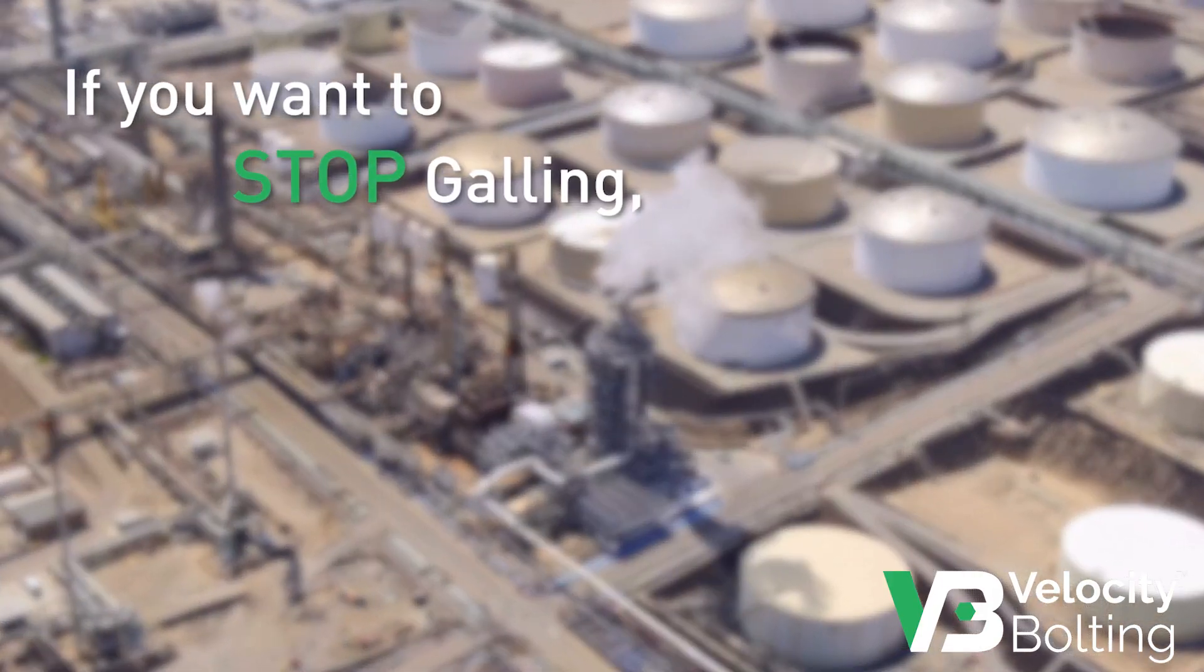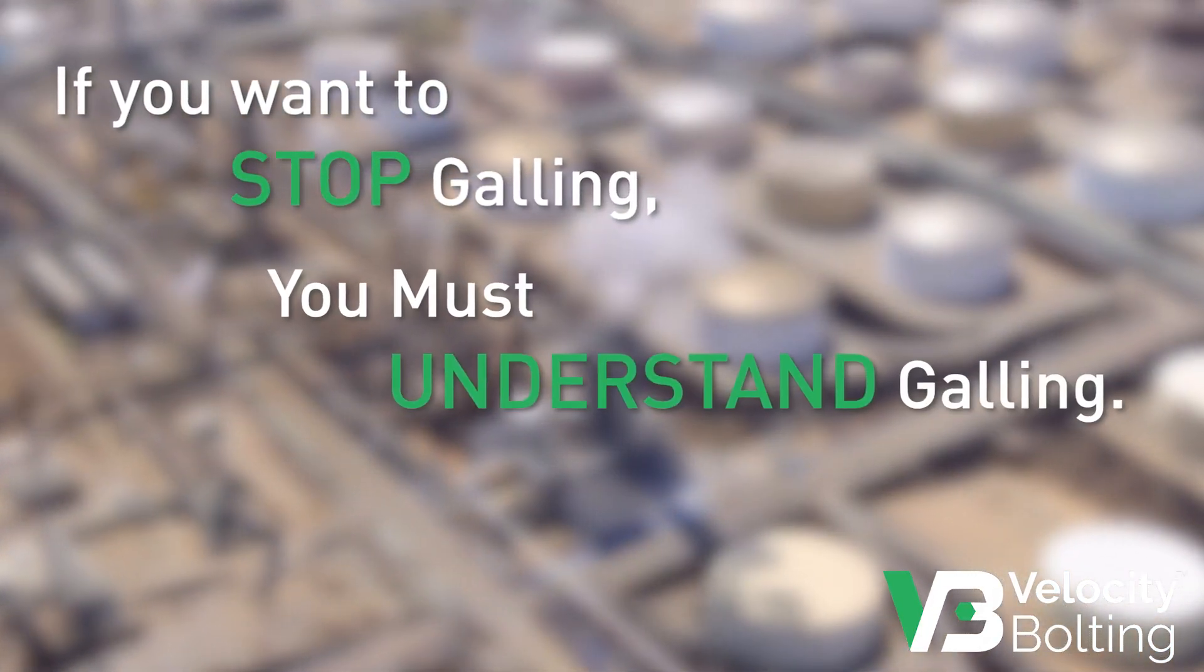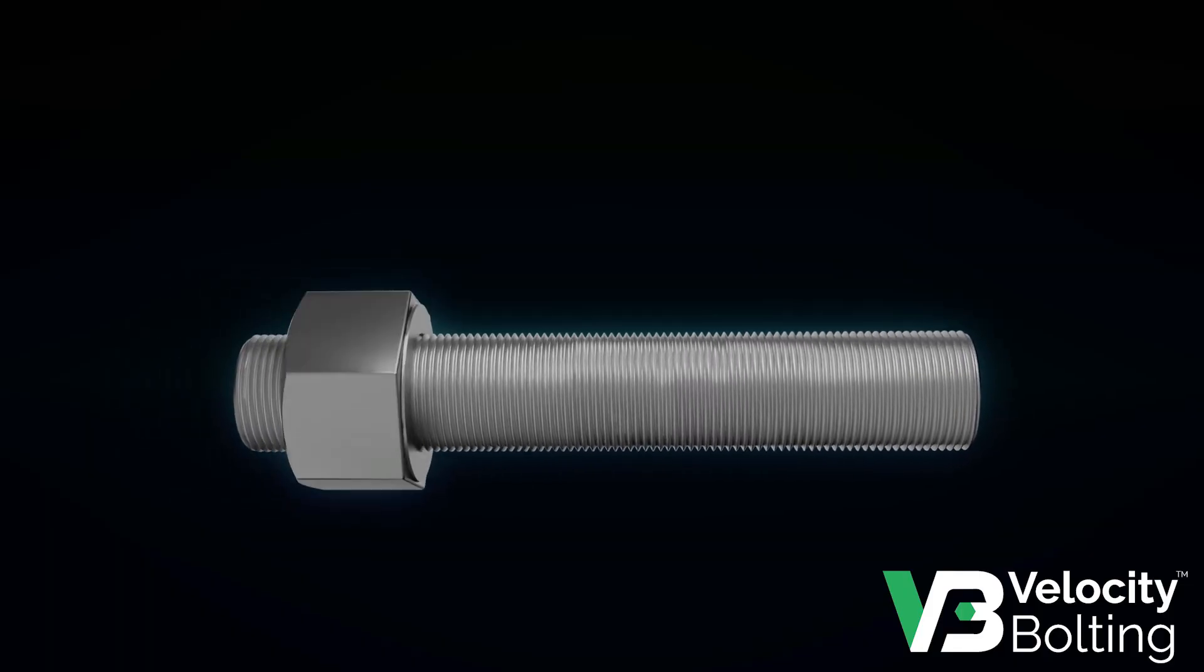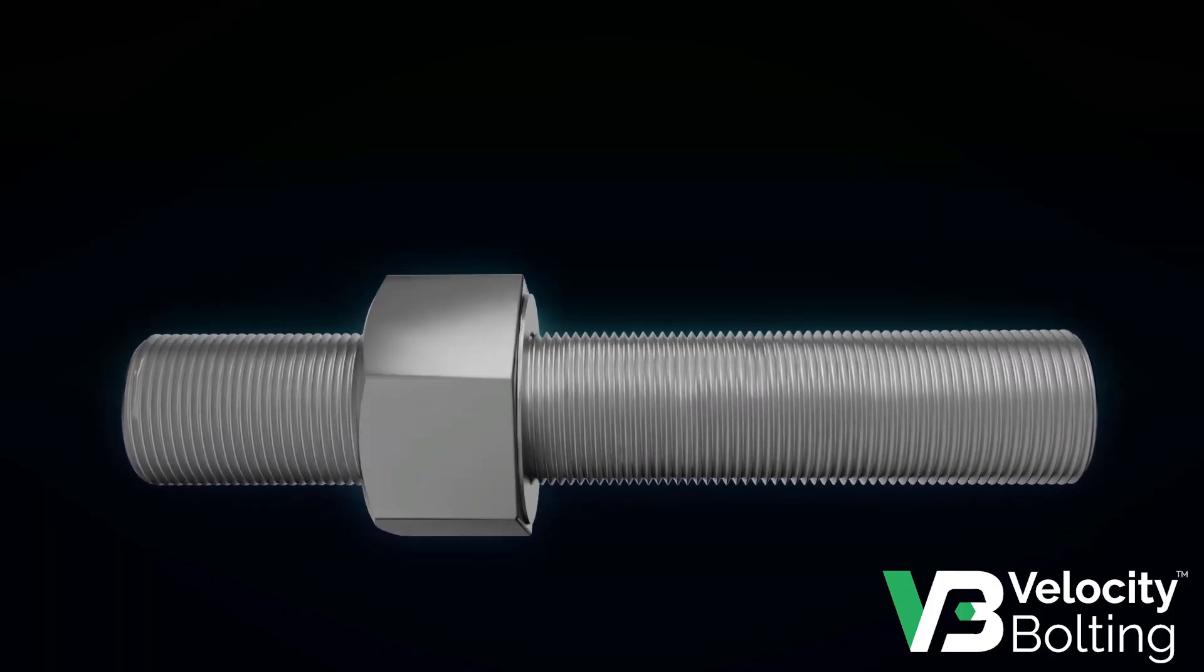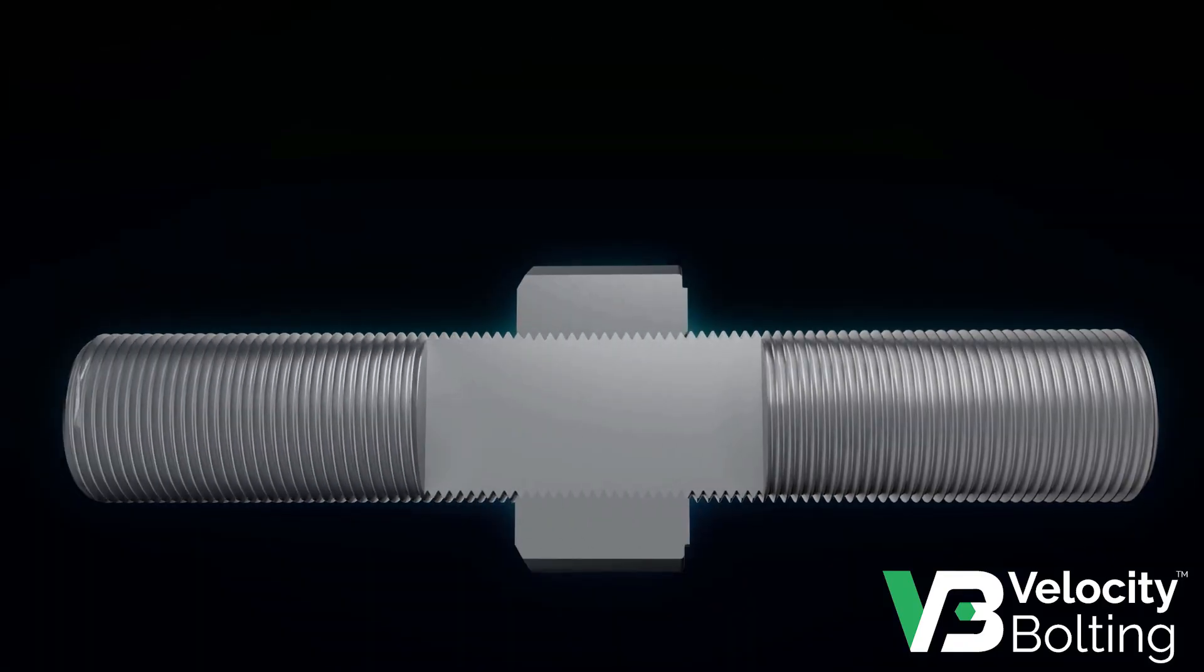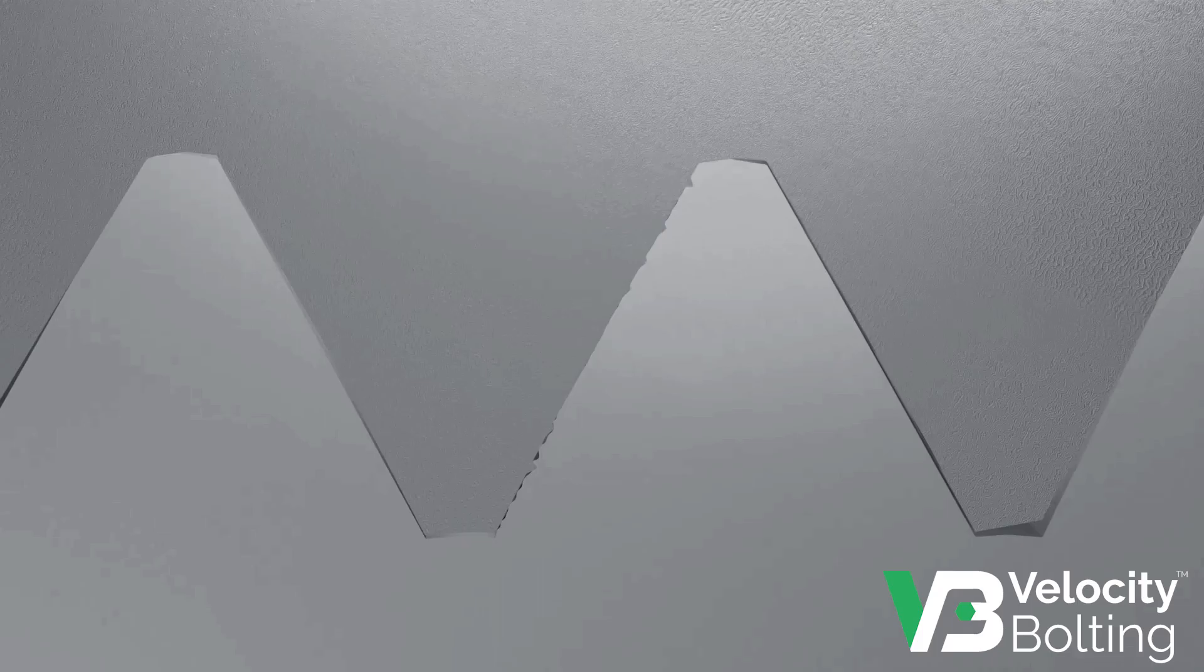If you want to stop galling, you need to know how it happens. To the naked eye, the nut and bolt look like two smooth surfaces of metal in continuous contact, creating an evenly distributed load. But when we zoom in at a microscopic level, we see imperfections.